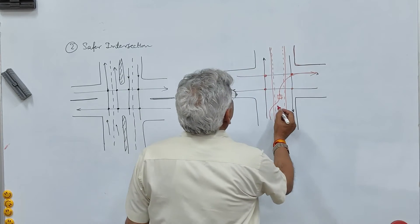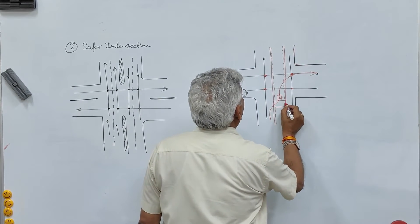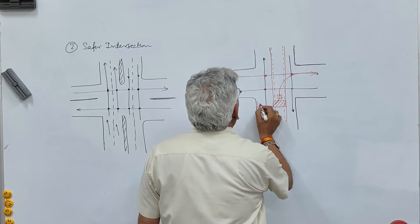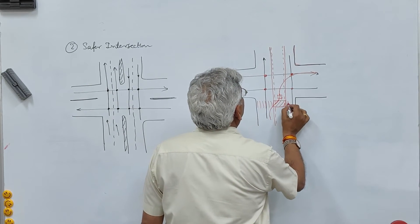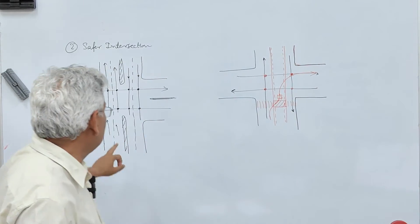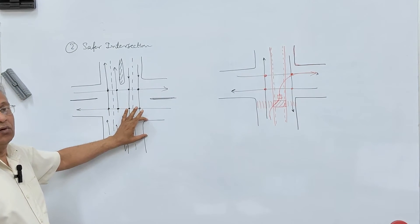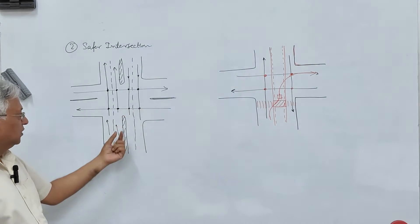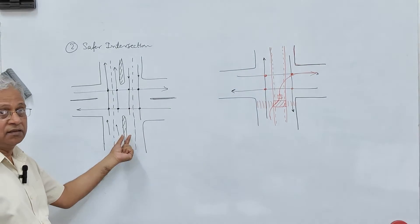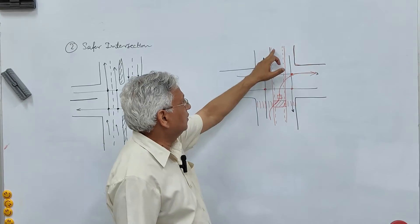With the road diet configuration, you can also provide a pedestrian refuge island for crossing pedestrians, making it safer for them as well. In the original four-lane undivided road, pedestrians are required to cross all four lanes in one go, since there is no physical median — only yellow centerline markings separating the directions of travel.